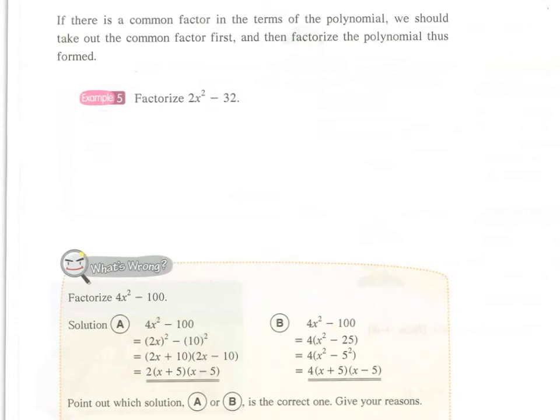Now we have example 5. Factorize 2x² - 32. It happens that 2x² is actually not a square number, and neither is 32. Therefore, we cannot directly apply the difference of two squares method here.